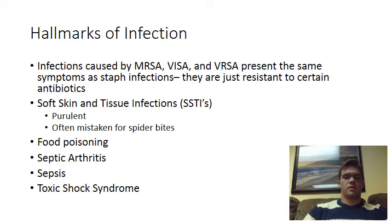Aside from SSTIs, another way you can get infected by S. aureus is through food poisoning, where you eat food that's been contaminated by the bacteria. While this isn't fun by any means — you might experience diarrhea, nausea, vomiting, or any combination of those — it's definitely not life-threatening, so it's typically one of the things people worry a lot less about when it comes to S. aureus.